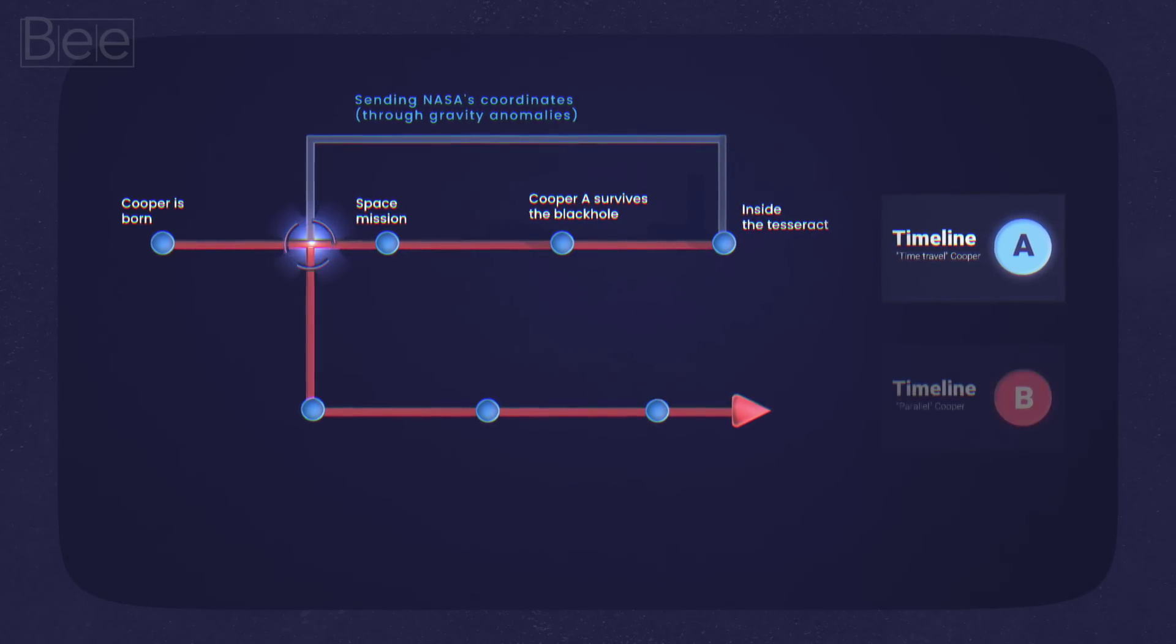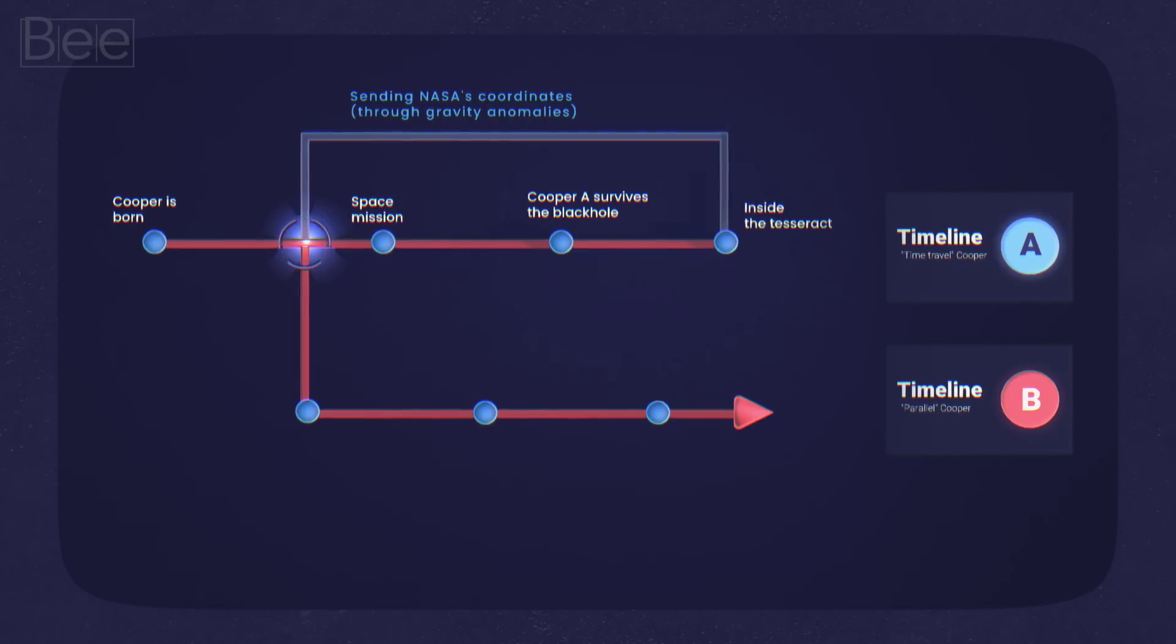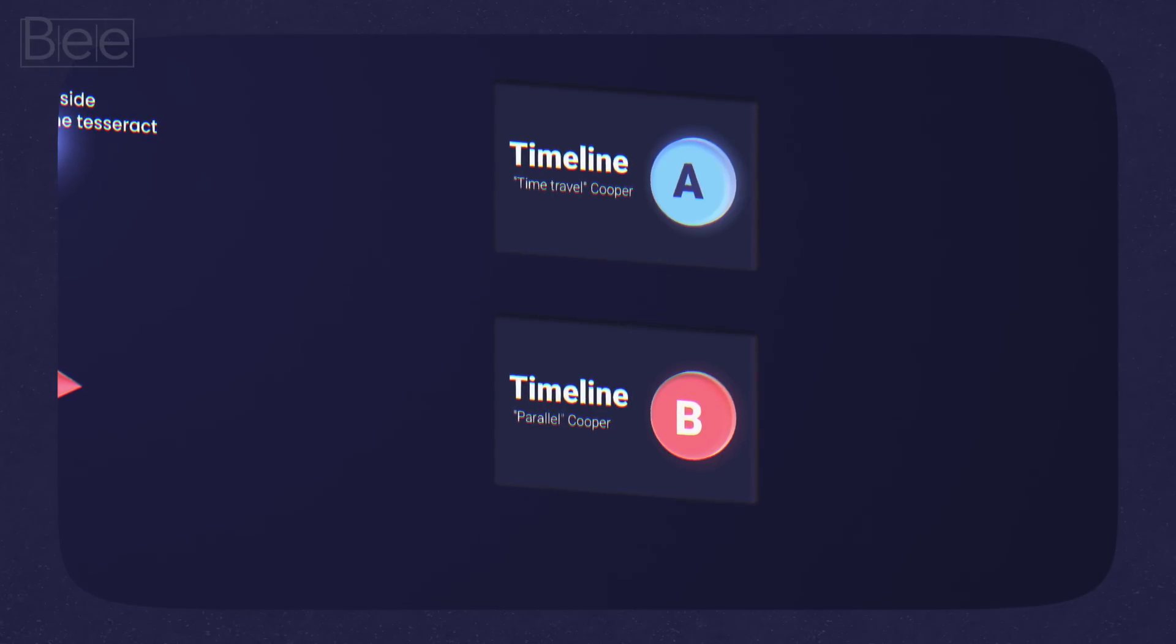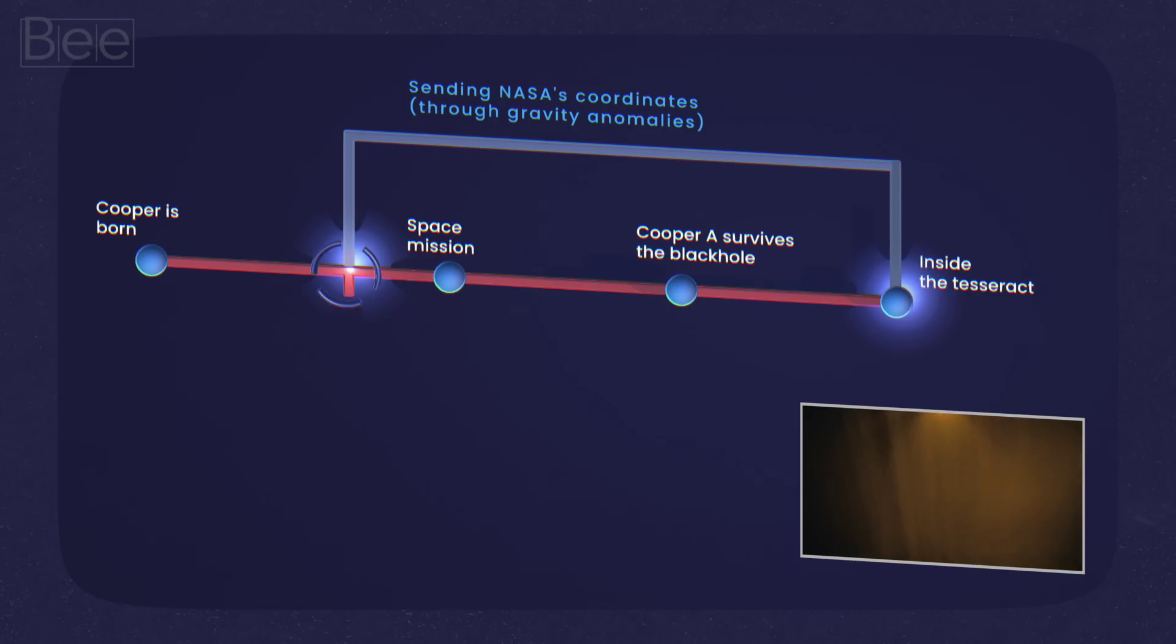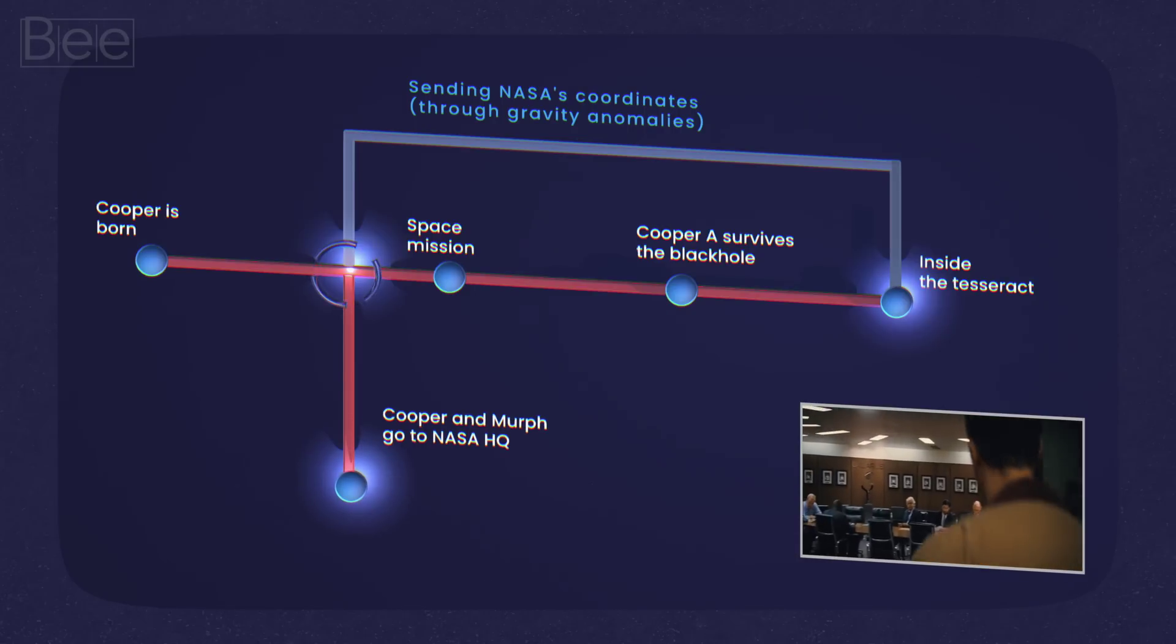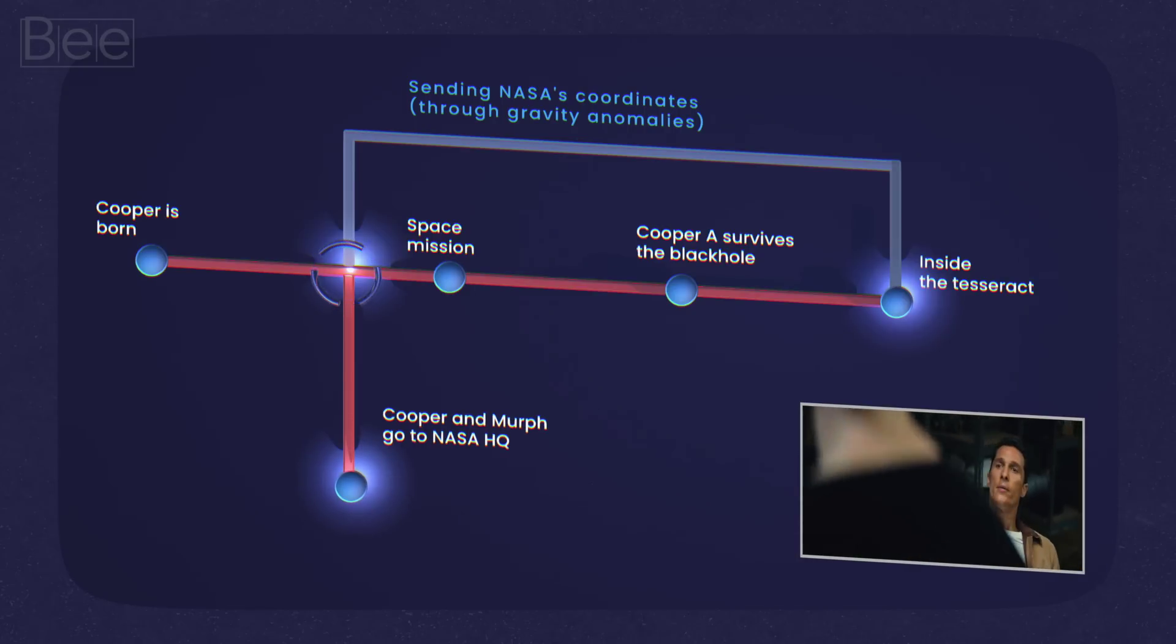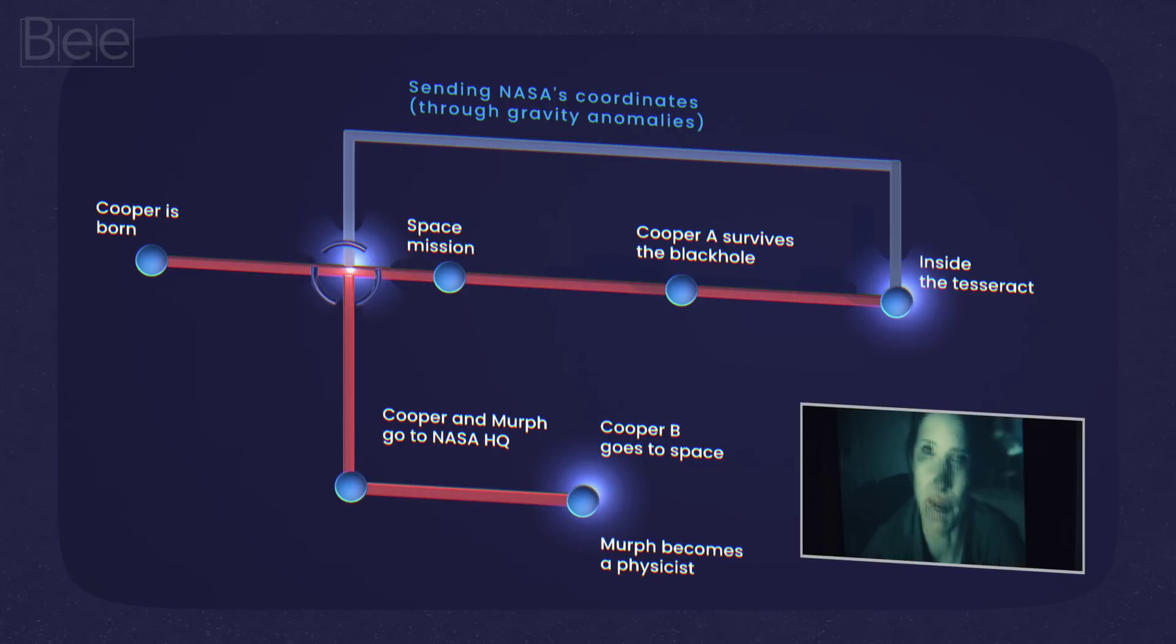As a result of this, it produces a whole different chronology that I refer to as timeline B, a parallel timeline. It is a different parallel possibility that would not otherwise exist if there was no information going backward in time. And then because of this coordinate, the movie tells us that Cooper and Murph go to the NASA's secret base. He is then introduced to the mission. Eventually he goes to space. And Murphy cries, but she becomes a physicist anyway.